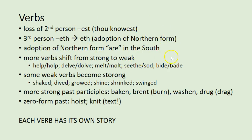We also see the adoption throughout the south of 'they are' rather than 'they be,' 'you are' rather than 'you beeth,' 'I am' rather than 'I be' or 'I been.' These northern forms of the verb to be take over from the older forms and become the recognizable modern forms we use in present-day English, although 'art' — as in 'thou art' — drops out with the loss of the inflected second-person verb.